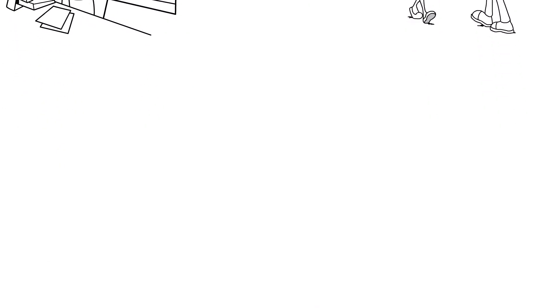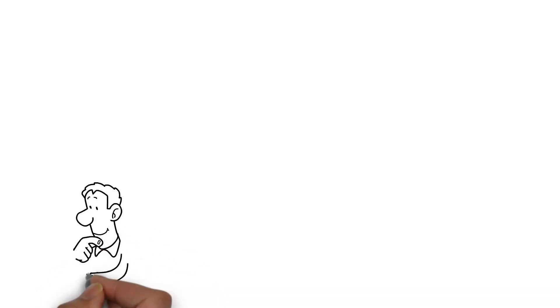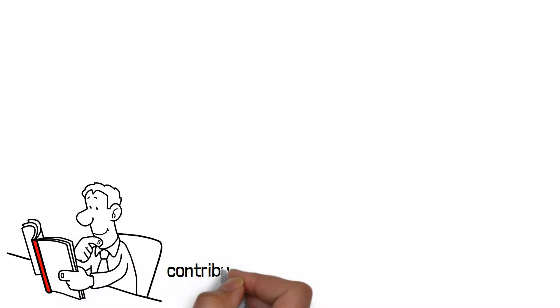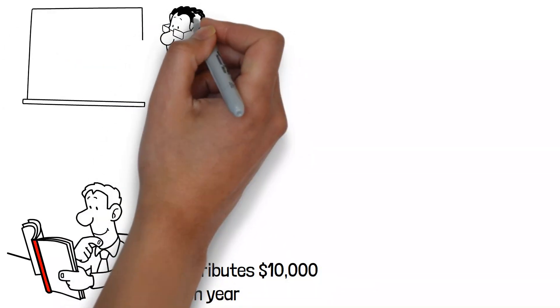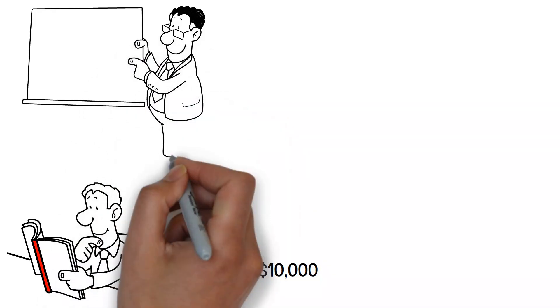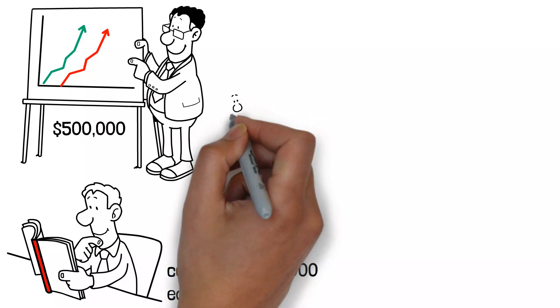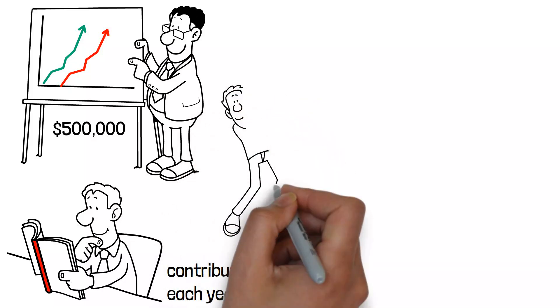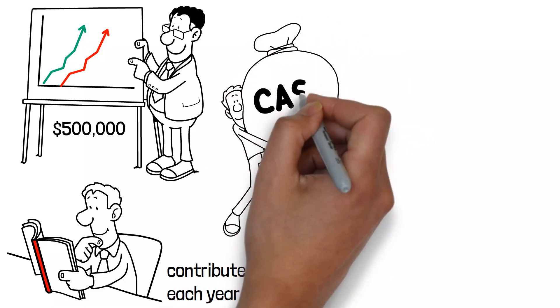Let us consider a case study. Consider the following scenario. A 30-year-old person starts a whole life insurance policy and contributes $10,000 each year. By the age of 60, the cash worth may be more than $500,000, assuming a 5% annual growth rate. This considerable money may be used to meet a variety of financial requirements while still providing a death benefit to recipients.